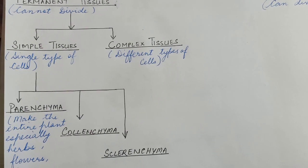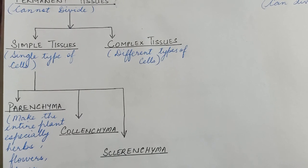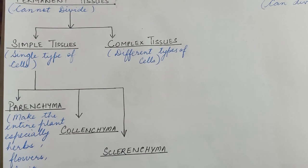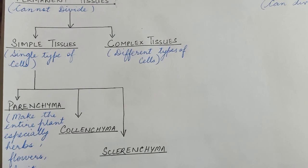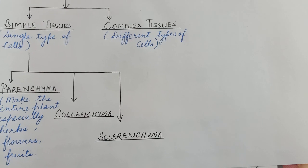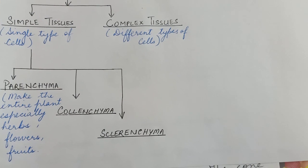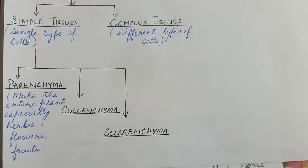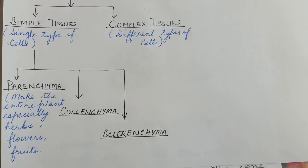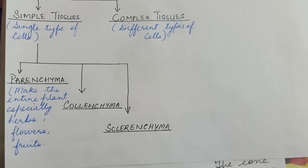In the second assignment we studied about one of the types of simple tissue, that is parenchyma tissue. This parenchyma tissue is responsible for making the whole plant and it is especially present in herbs, flowers, and fruits.